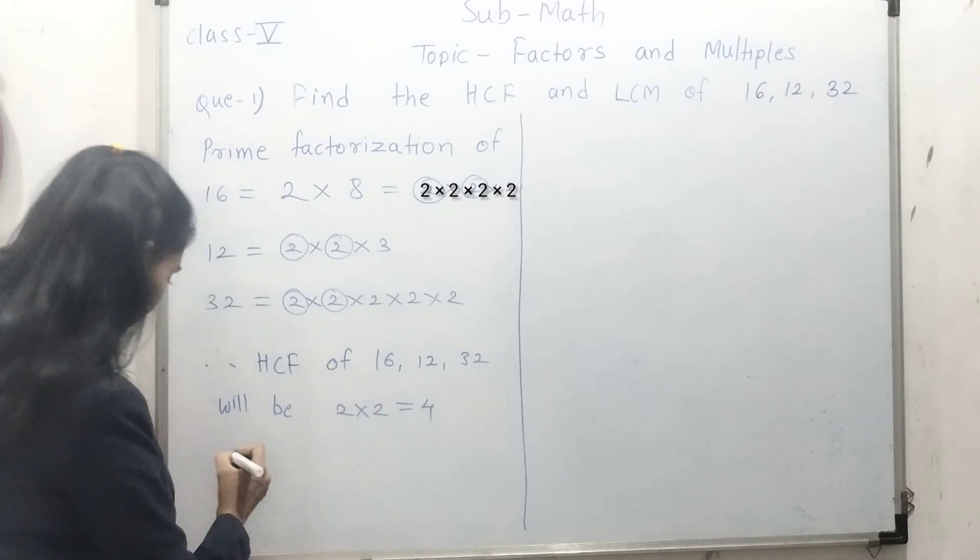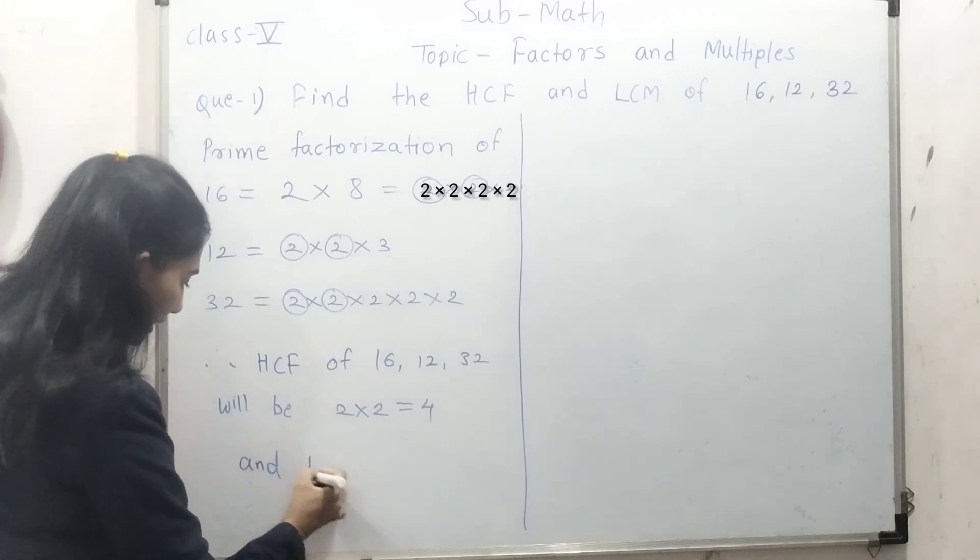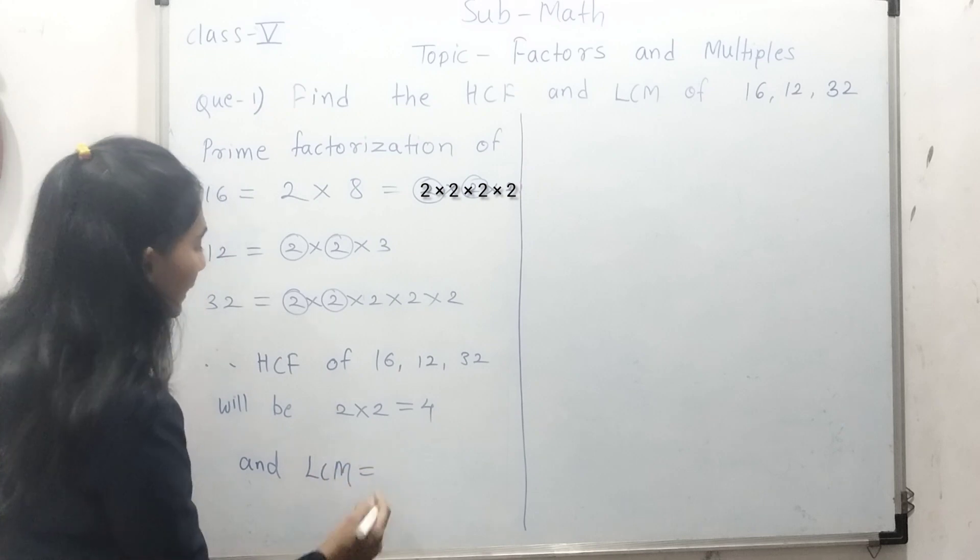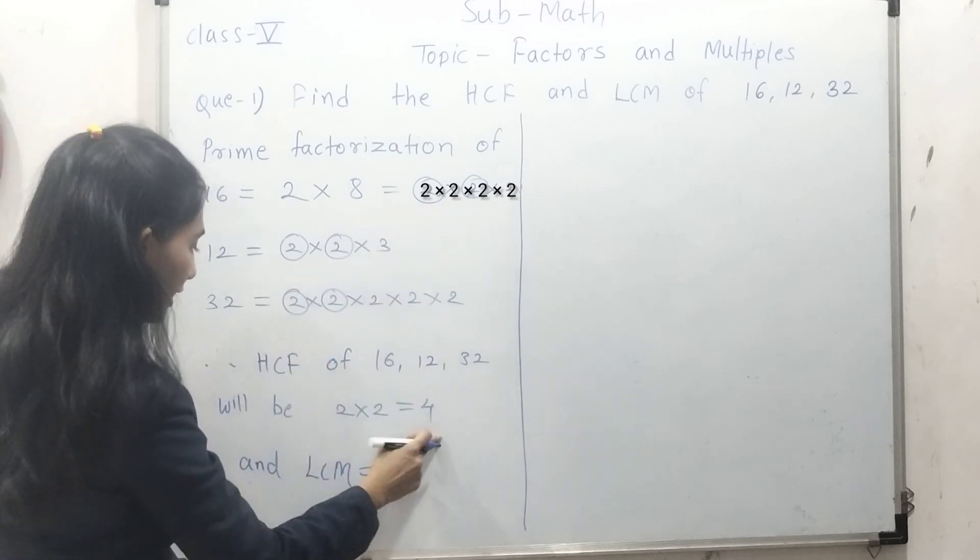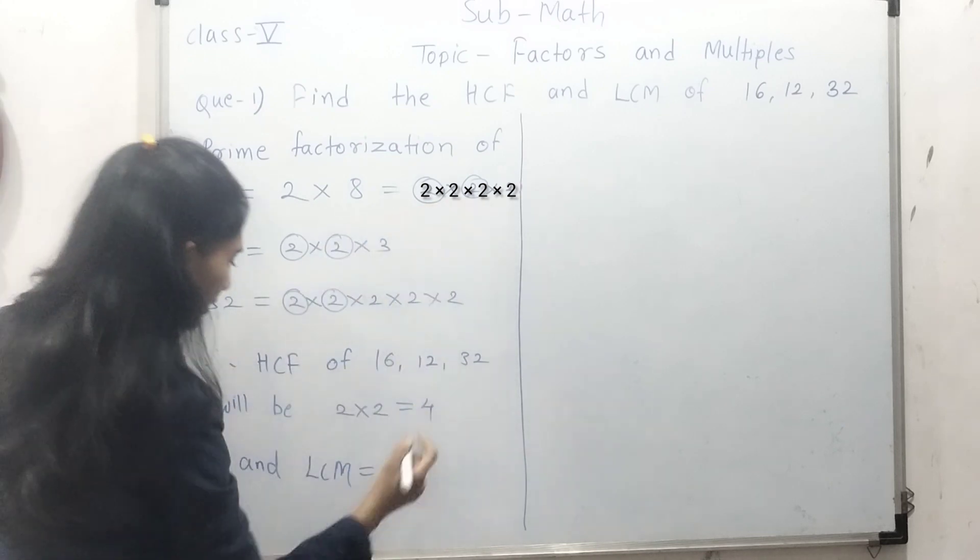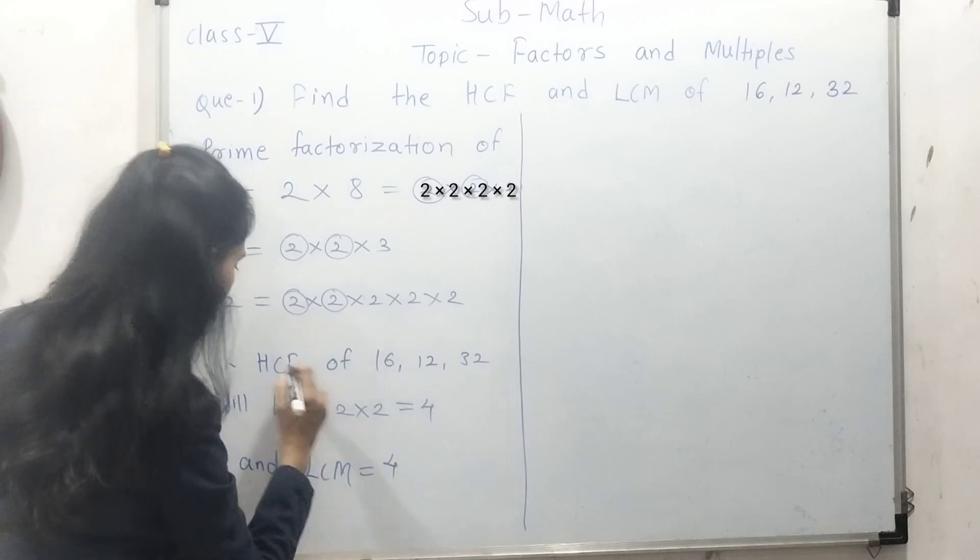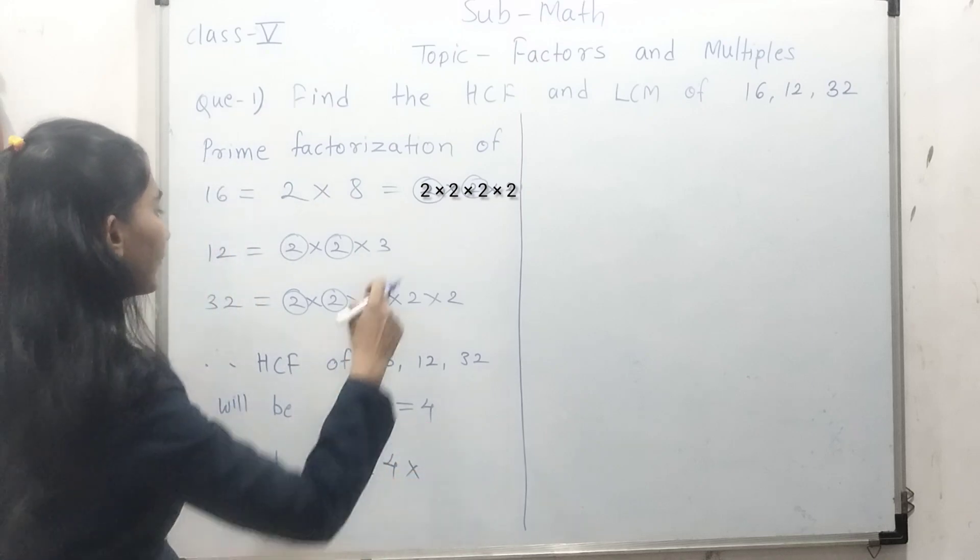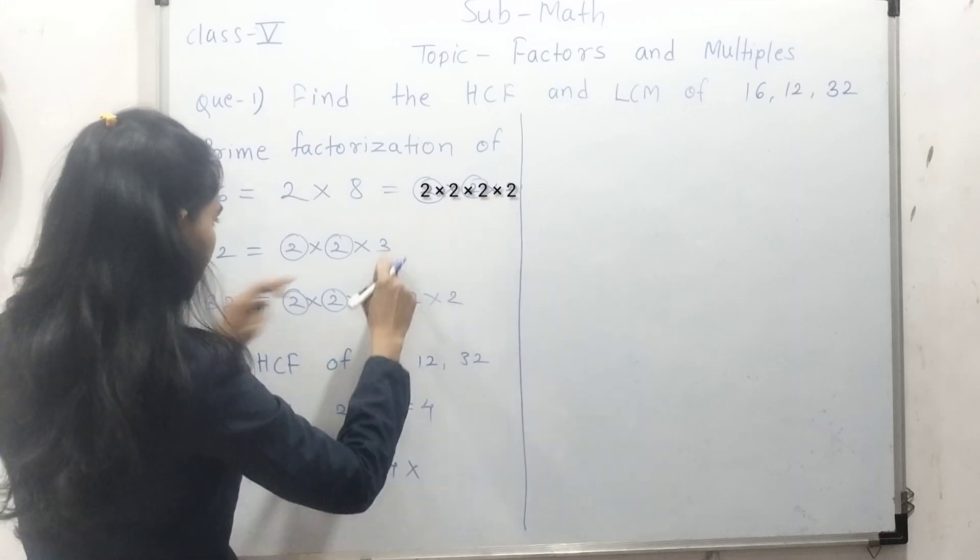Now, to find LCM, LCM will be here. Write down directly HCF, which is 4. Now we need to take again this 2 times 2. Just write down directly HCF is 4 multiplied by, then take the remaining factors: 2, 3.